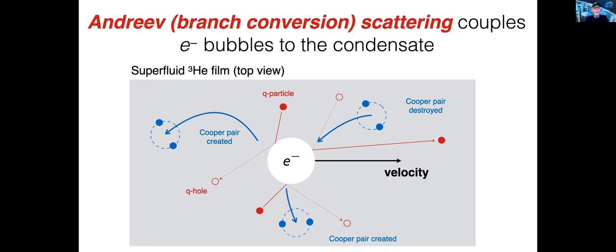In a BCS superfluid, additional collision processes occur. A quasiparticle branch converts into a quasihole, and in the process, adds a Cooper pair to the condensate. The reverse process also occurs. A quasihole branch converts to a quasiparticle with the destruction of a Cooper pair. Both are Andreev scattering processes.